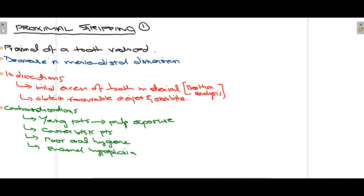The first method is proximal stripping. As the name suggests, the proximal surface of a tooth is reduced, resulting in a decrease in the mesiodistal dimension of that tooth. The indications for proximal stripping are: firstly, mild excess of tooth material where the tooth is larger than the arch length, assessed according to Bolton's analysis; and secondly, to obtain favorable overjet and overbite.